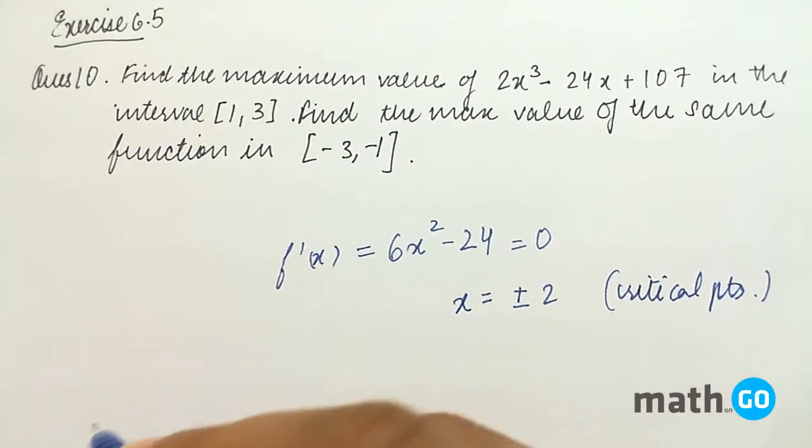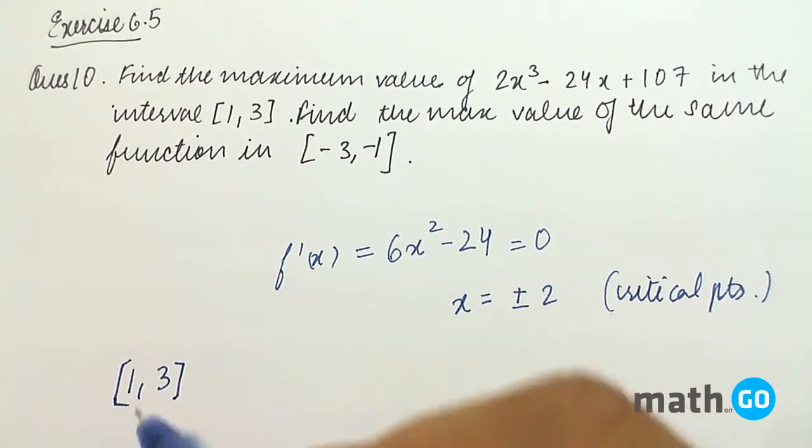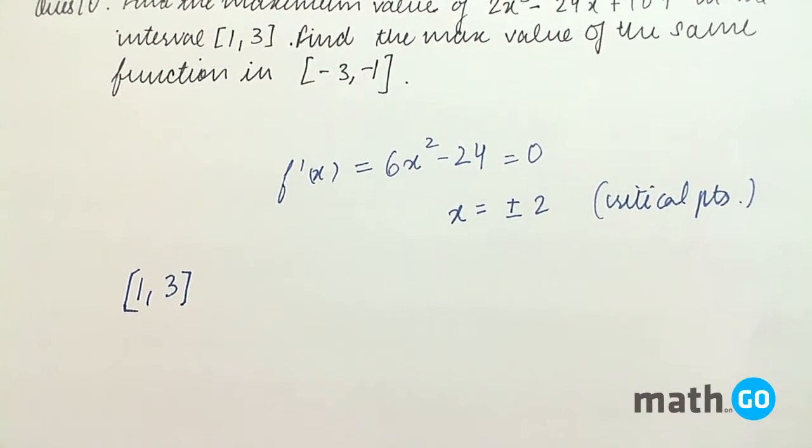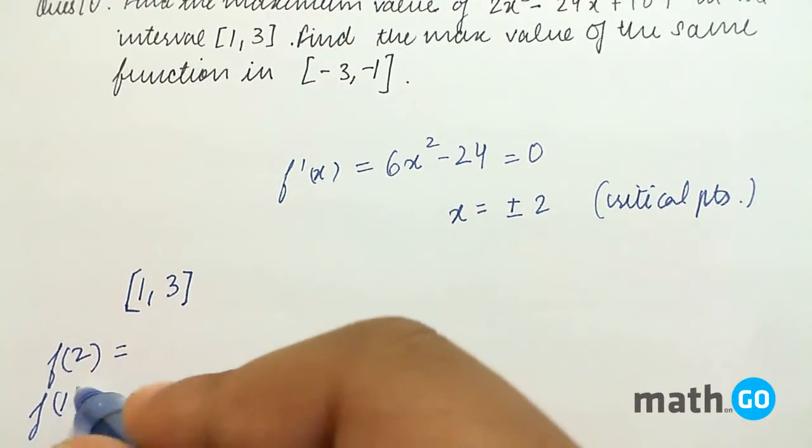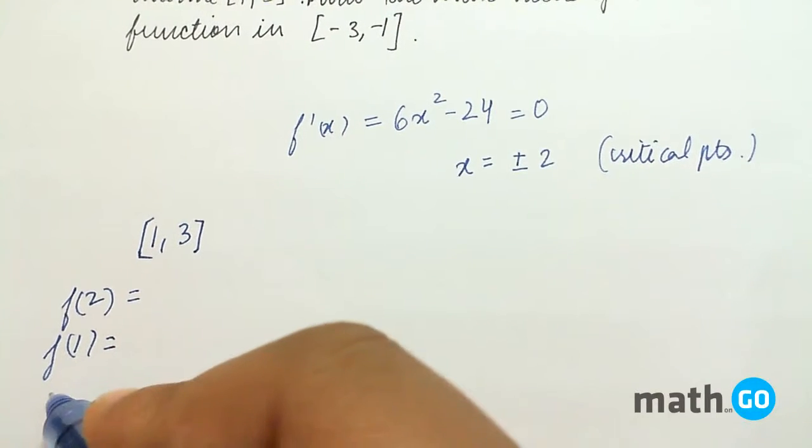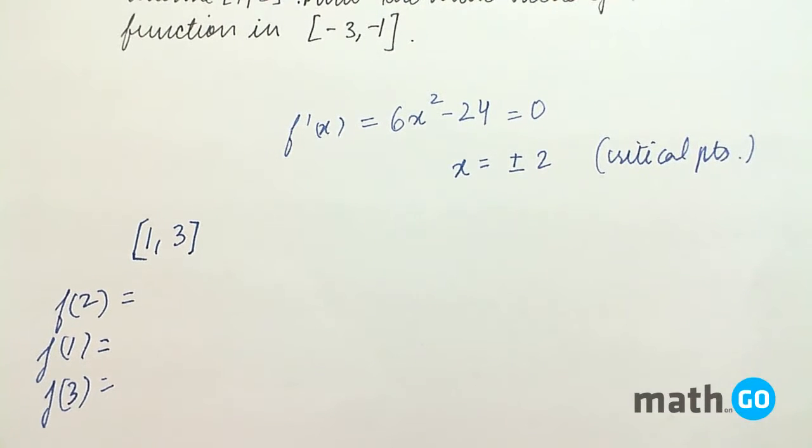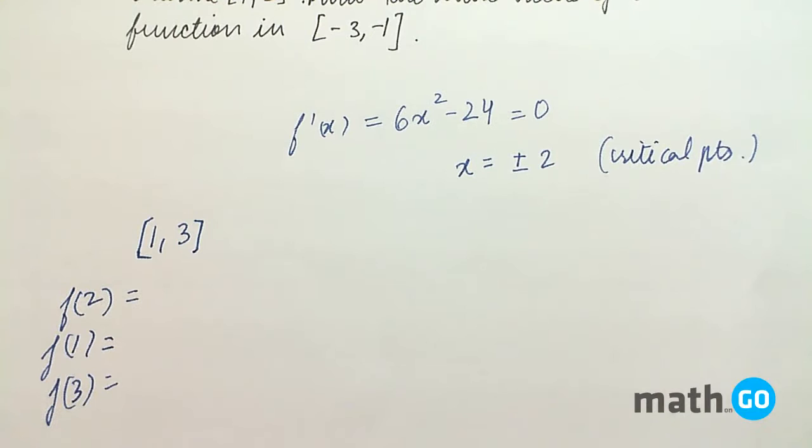First of all, considering the interval [1, 3]. We have to check the function value at the critical point, that is f(2), f(1) and f(3). Why are we checking the values at 1 and 3? Because it is a closed interval. So we check at the critical points and at the boundary points.